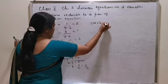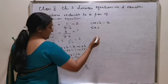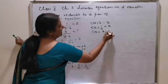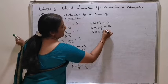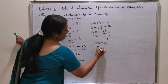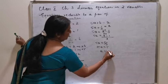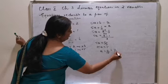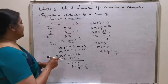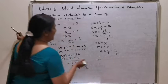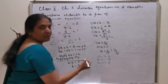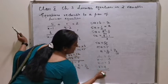Substituting into 5a plus b is equal to 2: 5a plus 1 by 3 is equal to 2, so 5a is equal to 2 minus 1 by 3, which by LCM gives 6 minus 1 by 3, equal to 5 by 3. Therefore 15a is equal to 5, or a is equal to 1 by 3. Giving back the substitution: 1 by x minus 1 equals a equals 1 by 3. Cross multiplying: x minus 1 is equal to 3, so x is equal to 4.